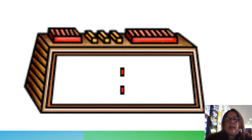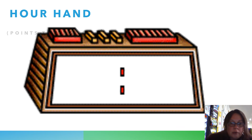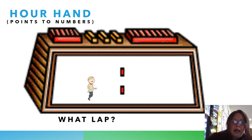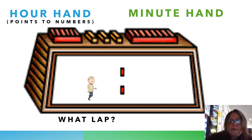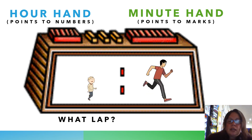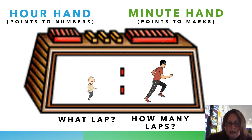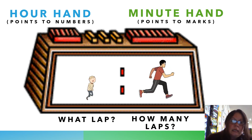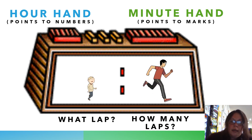Now this is a digital clock. A digital clock is what you're very familiar with, because a lot of clocks and watches have digital time. We're going to show you the guys again: the hour hand — the slower guy — points to the actual numbers on the clock face, and we ask what lap is he on. Then we have our minute hand, which points to the marks on an analog clock. He's the faster guy, and we want to know how many laps he's doing. So we have the slower hour hand covering distance, and the faster minute hand counting the laps.